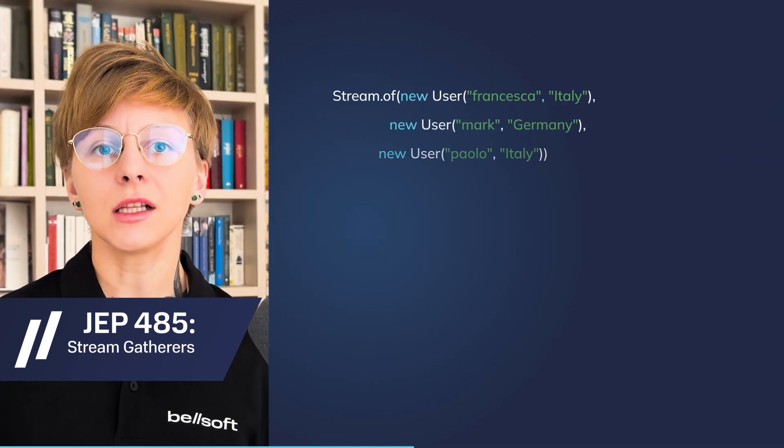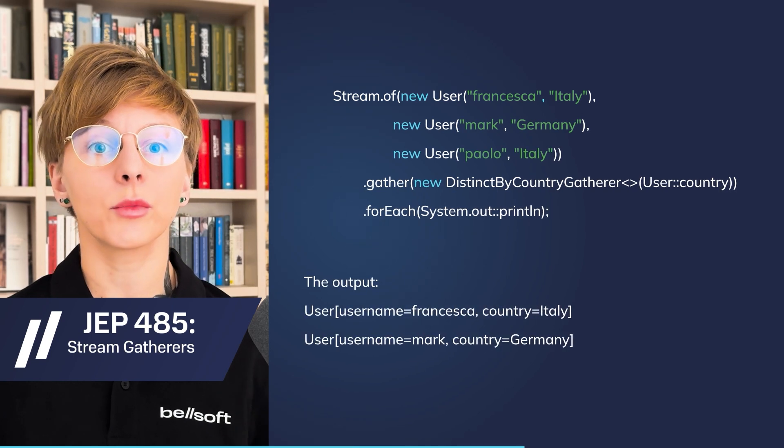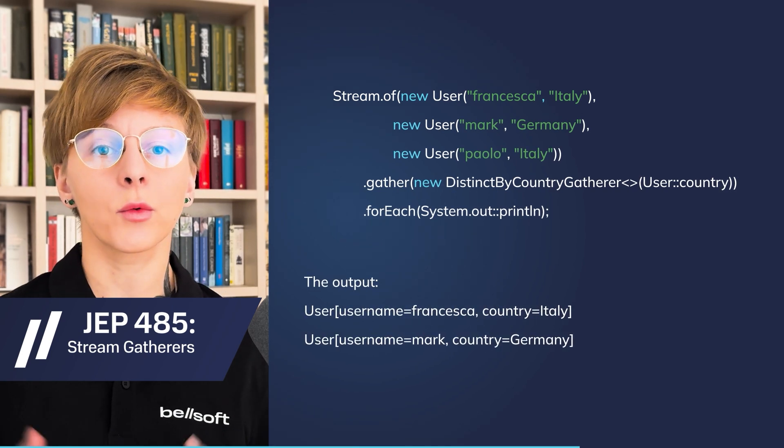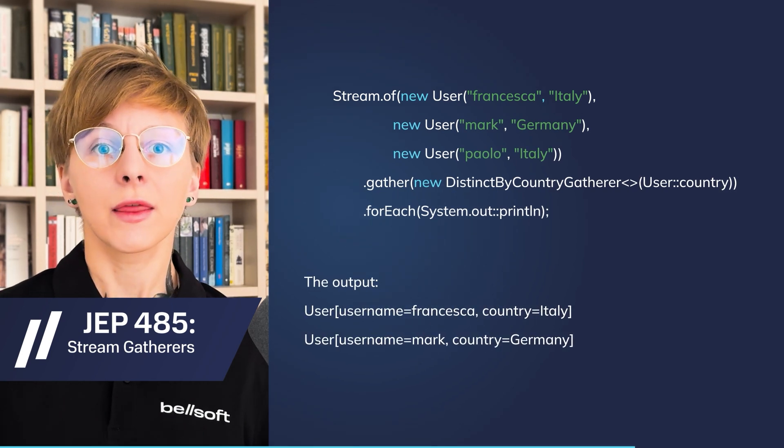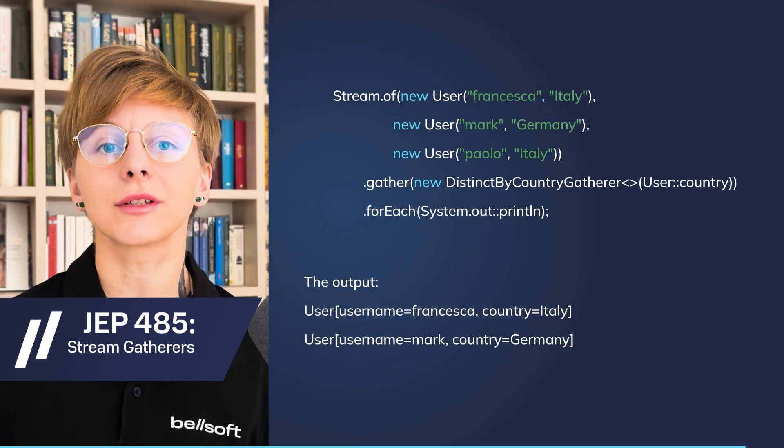JEP 485 finalizes the stream gatherers. It is an addition to the Stream API that enables developers to use custom intermediate operations with streams, thus reducing the boilerplate code.